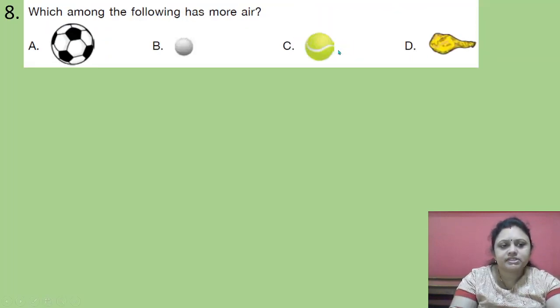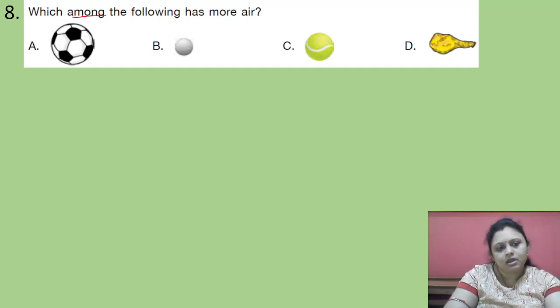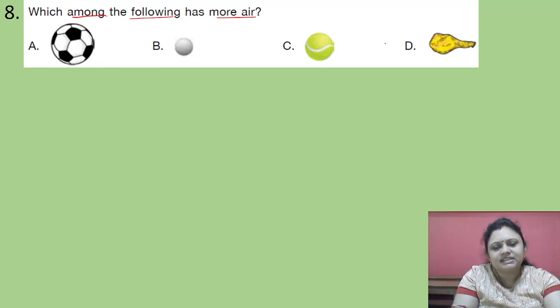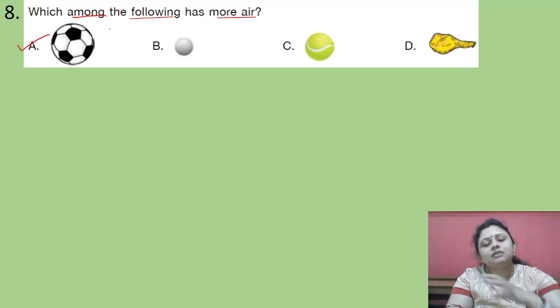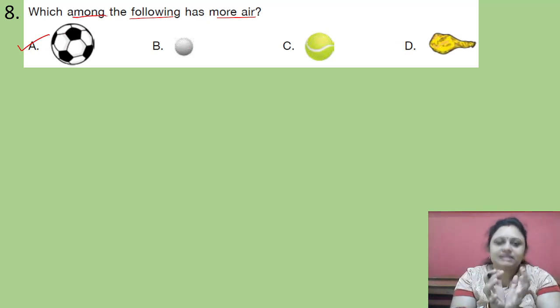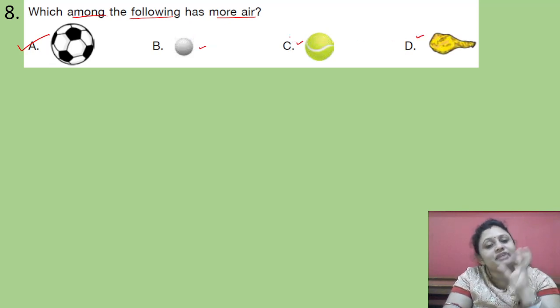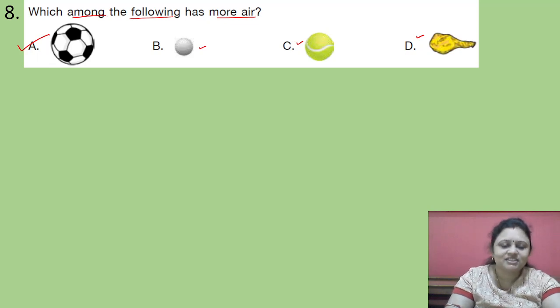Coming to the next question. Which among the following has more air? Four options are there. You can see A, B, C, D. Can you tell me which has more air? Yes. That is football. It is the total air is present inside. And these are in these things no airs are present. If at all present it is in very less amount. So correct answer is option A.